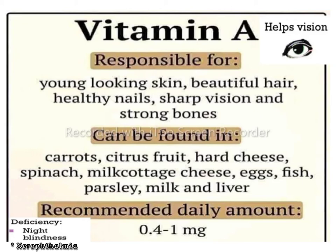Vitamin A, also called retinol, acts on rhodopsin — a pigment-containing sensory protein or light-sensitive receptor that converts light into electrical signals, helping in vision. Vitamin A is responsible for keeping your skin healthy, nails, sharp vision, and strong bones. Vitamin A can be found in carrot, citrus fruit, hard cheese, spinach, milk, cottage cheese, eggs, fish, parsley, and liver.